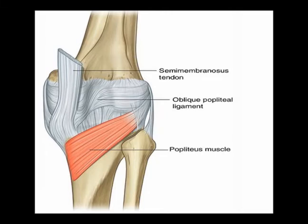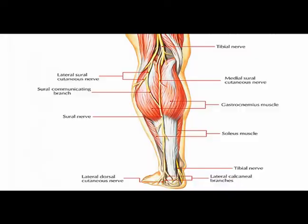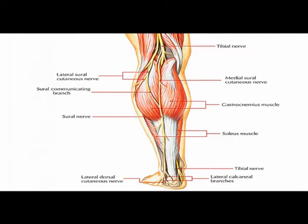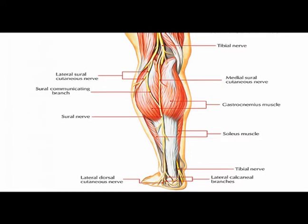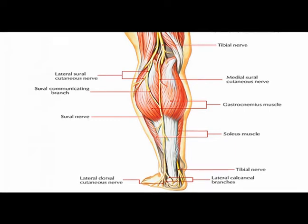When contracted concentrically, it laterally rotates the femur on the tibia, basically unlocking the knee joint so that knee flexion can occur. It is innervated by the tibial nerve at vertebral levels L4, L5, and S1.